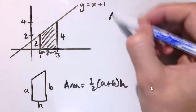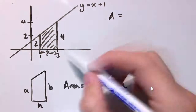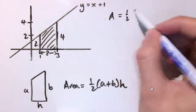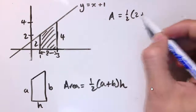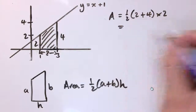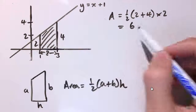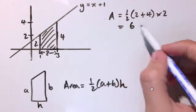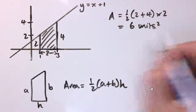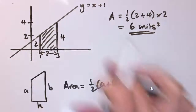The area equals one half times (2 + 4) times 2, which gives us half times 6 times 2 = 6 units squared.